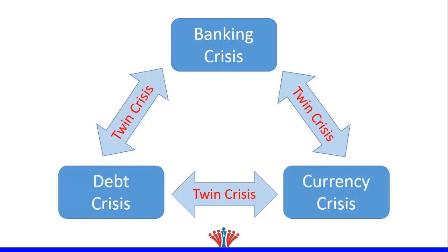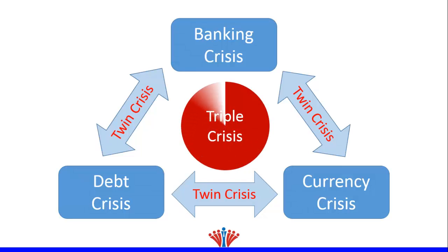The three types of financial crises could happen simultaneously, which is called a triple crisis. For example, banking, currency, and debt crises could all happen simultaneously.